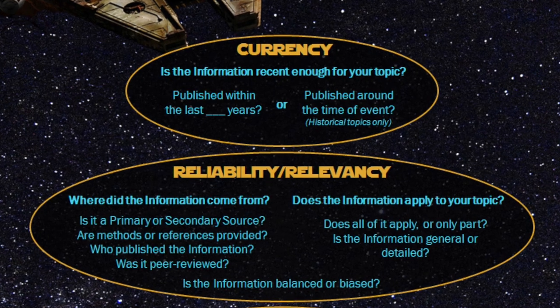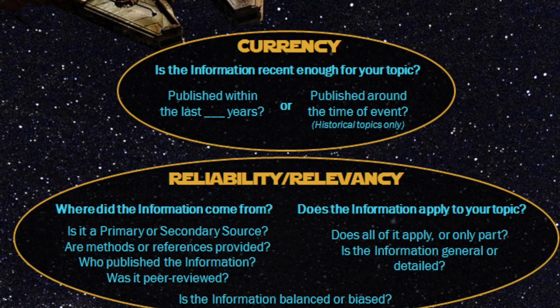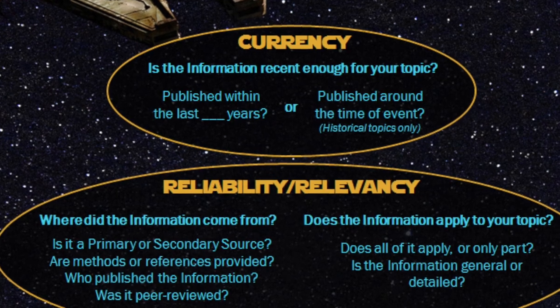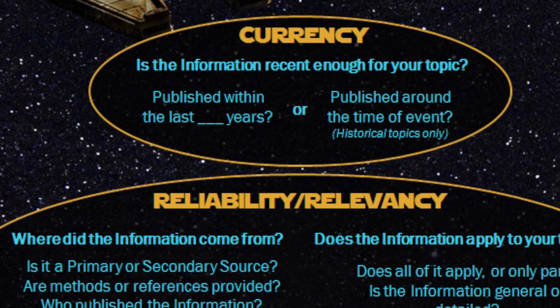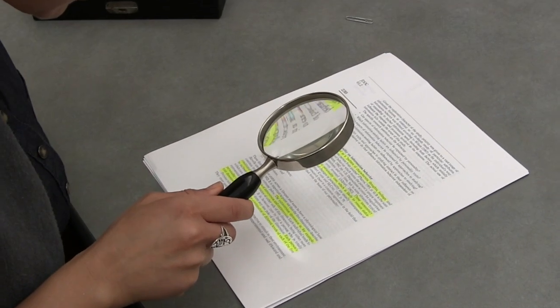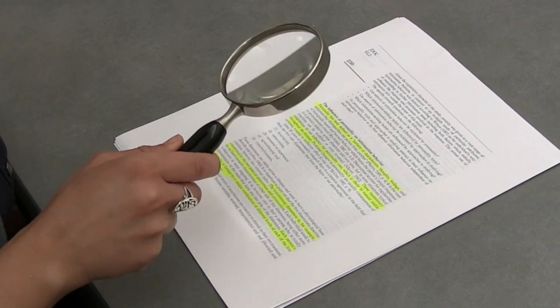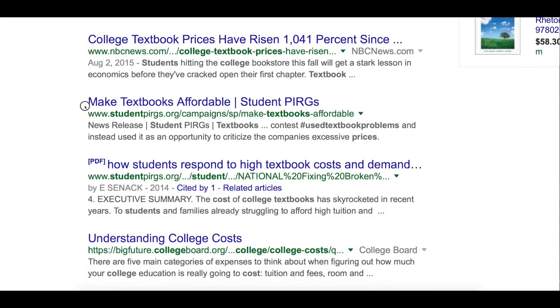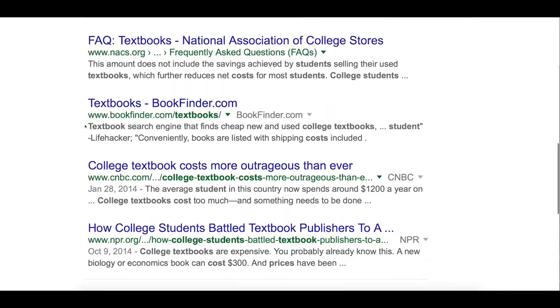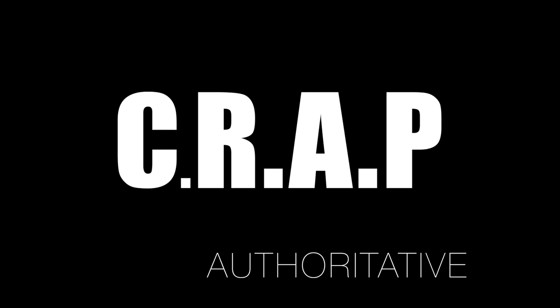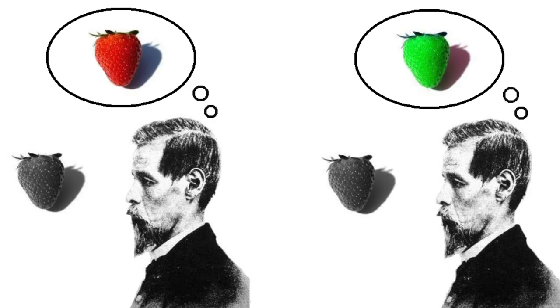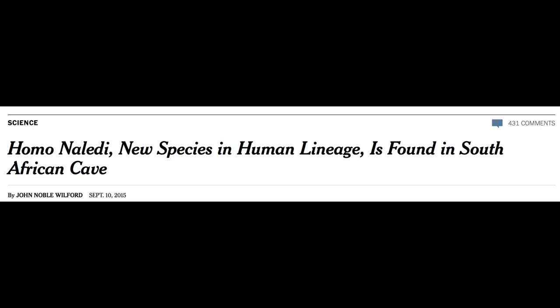The CRAP test is a useful set of criteria to judge any information you come across. Evaluating is vital, especially when we're out on the open web. Every piece of information should be examined. Nothing gets 100% on the CRAP test — nothing is completely objective, for example.